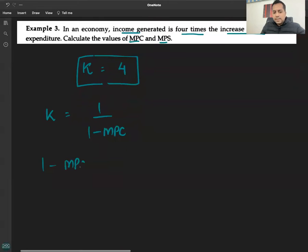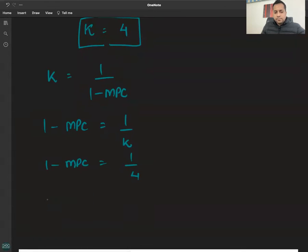One minus MPC is equal to one upon K which is equal to one upon four. One minus MPC is equal to 0.25.